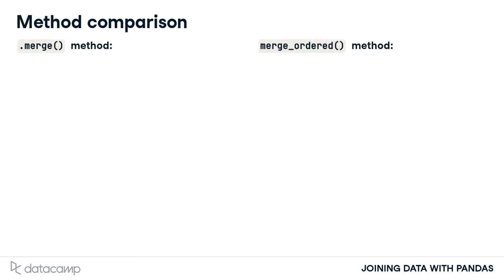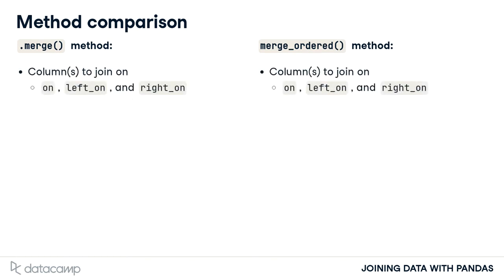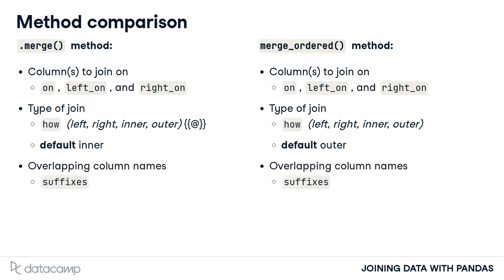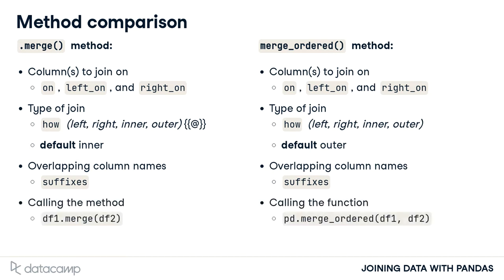Let's give context to this method. It has many of the same arguments we have already covered with the merge method. They both contain arguments to allow us to merge two tables on different columns, and both methods support different types of joins. Although the default for the merge method is inner, it is outer for the Merge Ordered method. Also, both methods support suffixes for overlapping column names. However, how you call each of the methods is different.